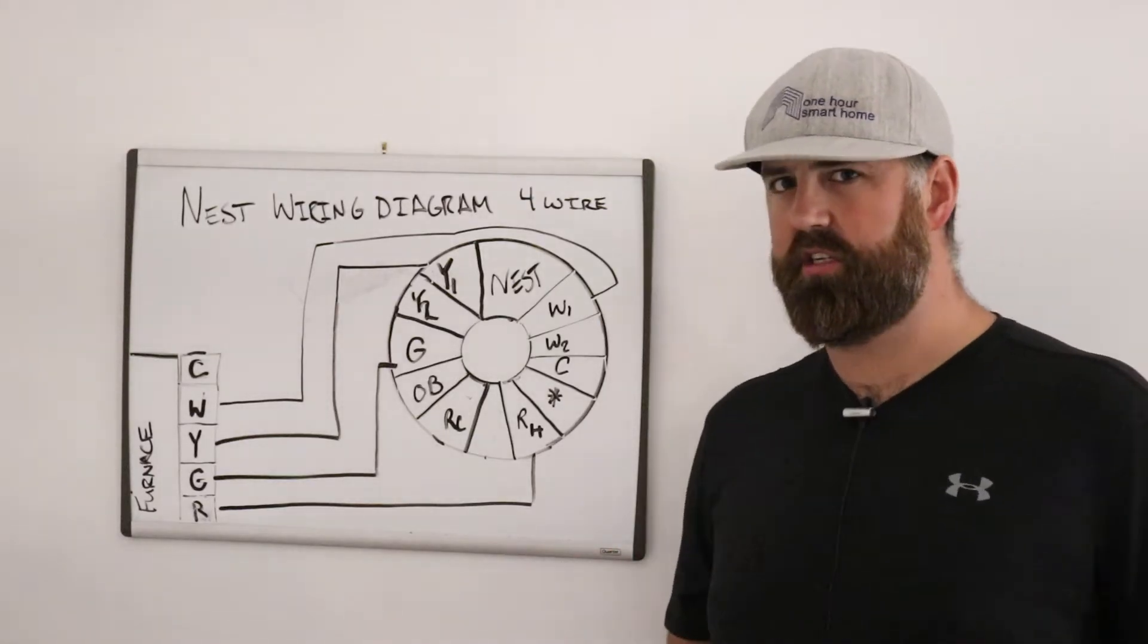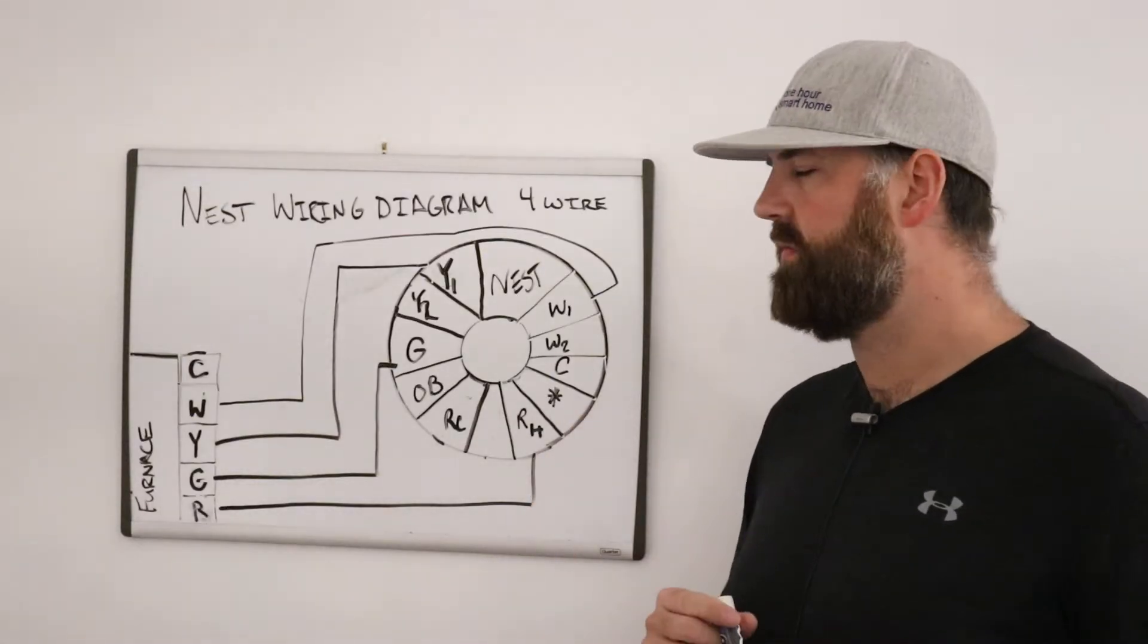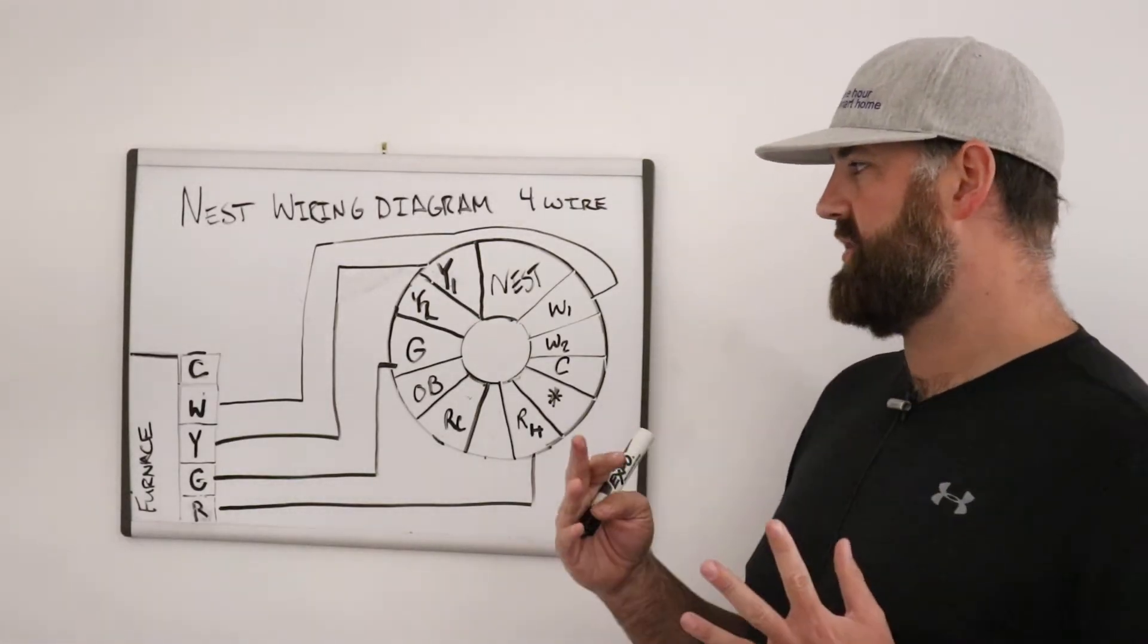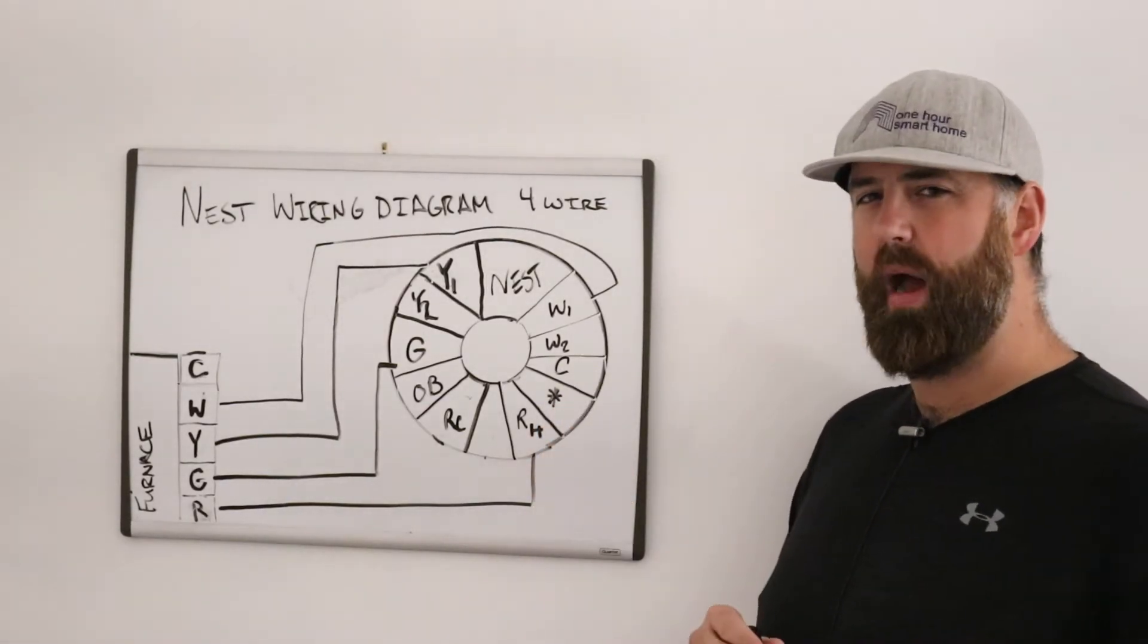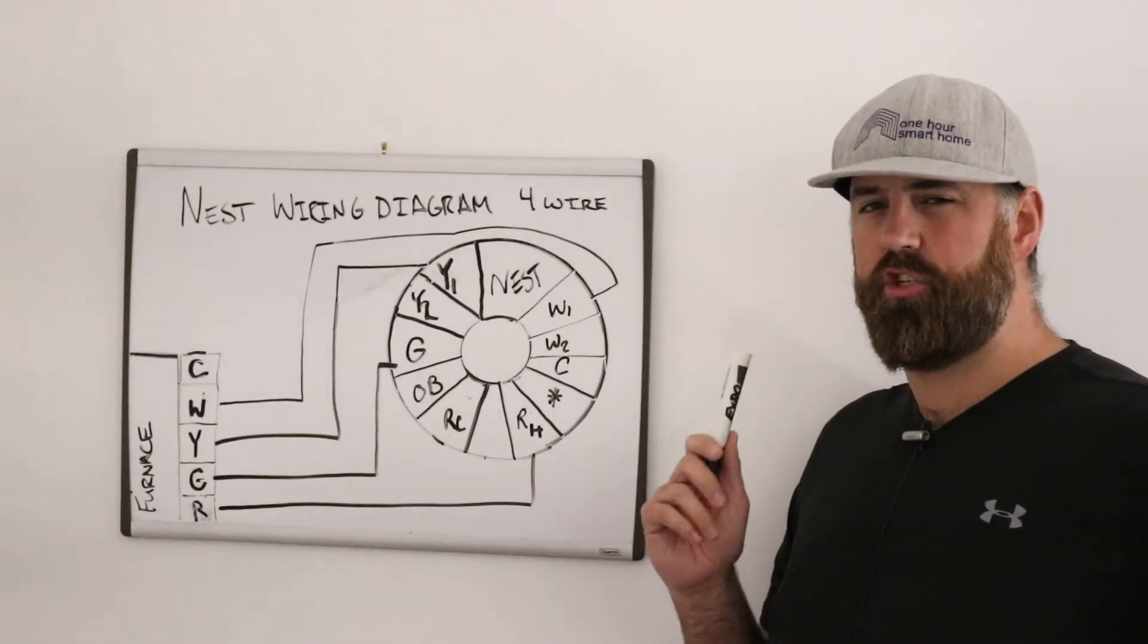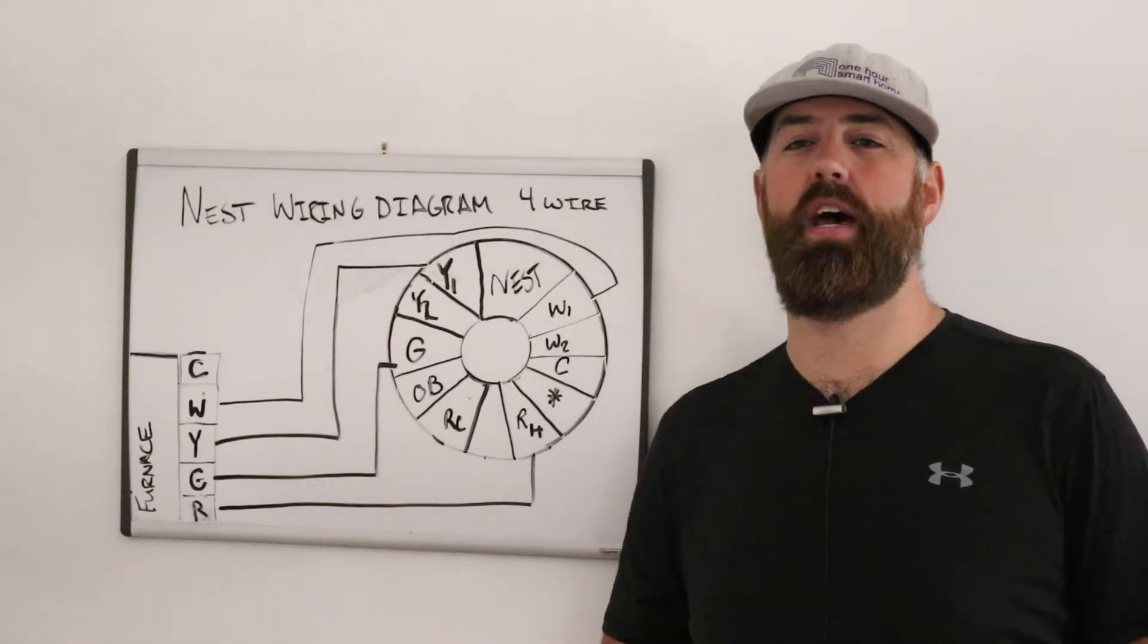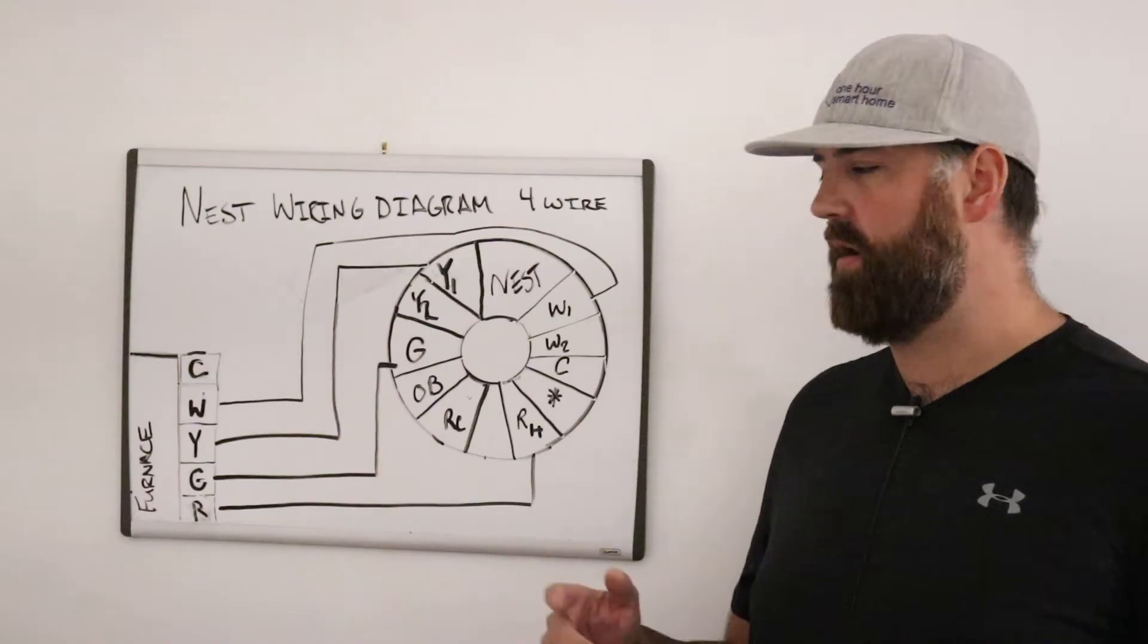The STAR terminal is used for accessories. It can be used for a dehumidifier or a humidifier. We've got a video on how to wire a humidifier for the nest as well. The C terminal is the common wire terminal. Now in the four-wire system, you usually don't have a common wire, but if you are having low power issues with your nest, you may need to add a common wire, which you can do, and we've got a video on how to do that as well.